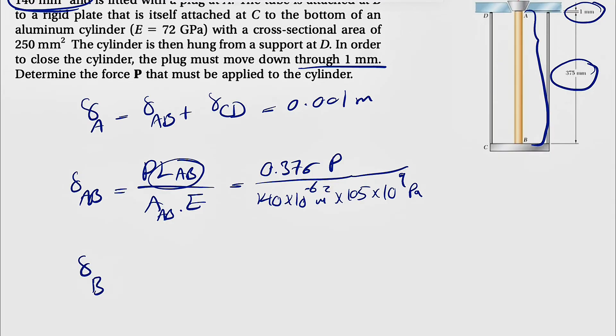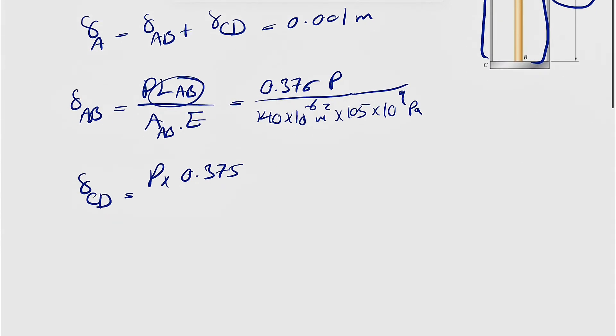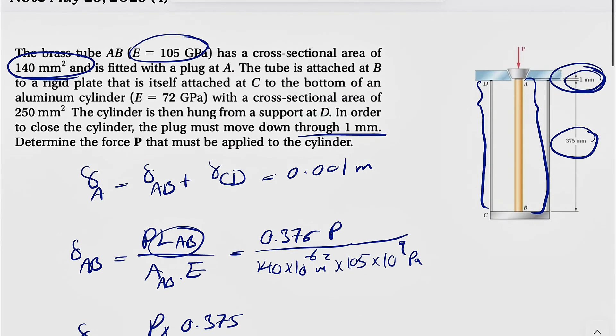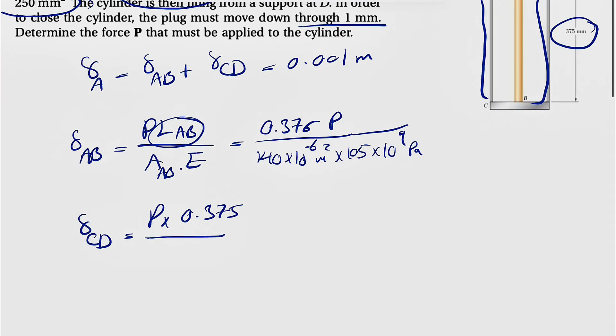You're going to have similar story for CD. Again, we have the same force, the length for CD. As we can see, the CD would be 375, so 0.375. That 1 mm is just for the brass or the member AB.